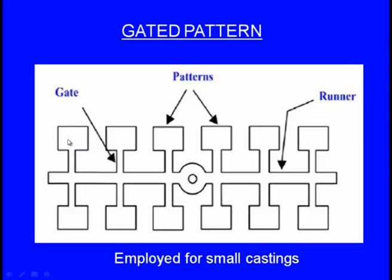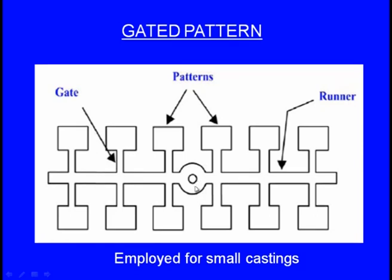We can see here: this square shape is one casting, and there are multiple such castings. In one molding box, we want to make 12 small castings of the same geometry. We make the pattern in an assembled way with a common sprue. We pour the molten metal through the common sprue; the horizontal passage is the runner; the metal travels and flows into all the gates, and finally fills all the cavities. That is the concept of the gated pattern — it creates cavities for several small castings in one mold.